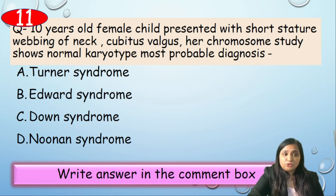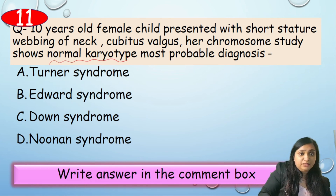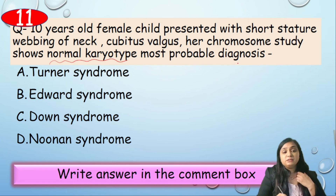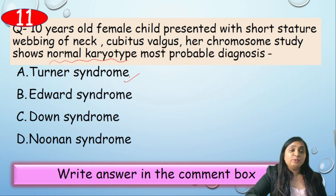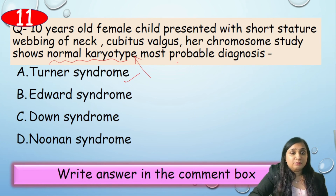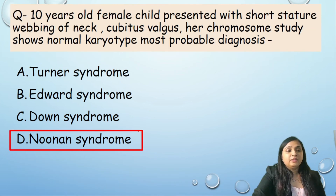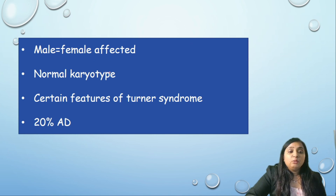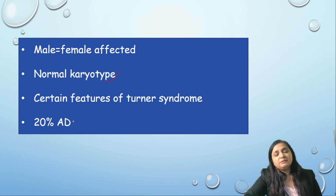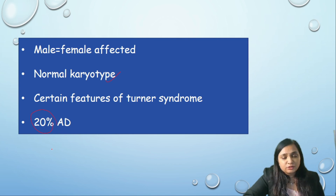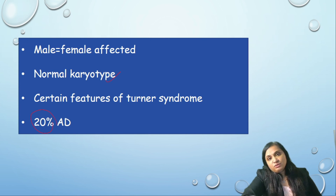Question 11: A 10-year-old female with short stature, webbing of the neck, and cubitus valgus deformity — chromosome study shows a normal karyotype. Most probable diagnosis? You might write Turner syndrome, but here is the catch: if all findings are suggestive of Turner syndrome but the karyotype is normal — not mosaic, no structural anomalies, not 45X — it is male Turner syndrome, called Noonan syndrome. Males and females are equally affected, karyotype is normal, certain features are similar to Turner syndrome, and in 20% of cases it is inherited by autosomal dominant route.